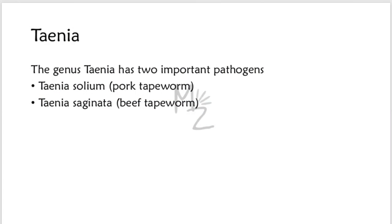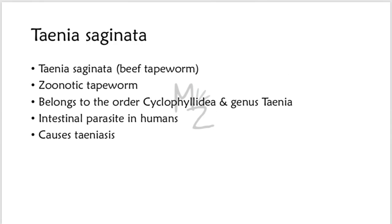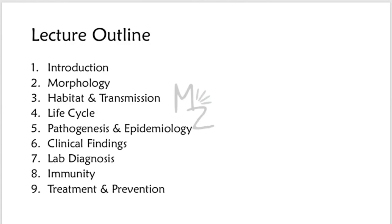Let's dig into it. The genus Taenia has two important pathogens: Taenia solium, also called the pork tapeworm, and Taenia saginata, also called the beef tapeworm. Taeniasis is a disease caused by Taenia. Taenia solium is responsible for causing taeniasis and its larvae are responsible for causing cysticercosis. On the other hand, Taenia saginata only causes taeniasis — it is not involved in causing cysticercosis. Taenia saginata is a zoonotic tapeworm; the infection gets from an animal into a human being. It belongs to the order Cyclophyllidea and genus Taenia, and it is an intestinal parasite in humans.